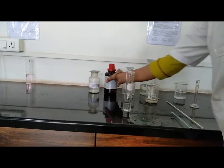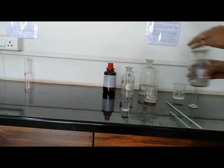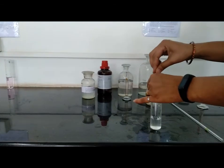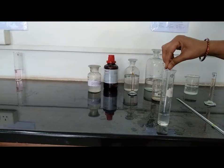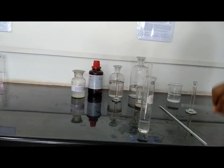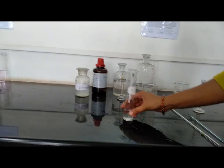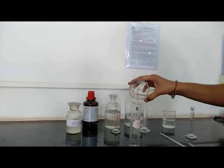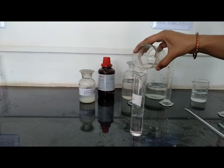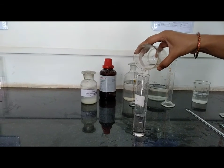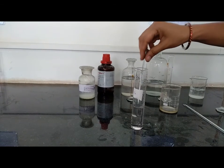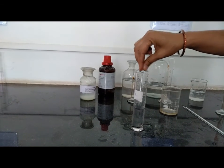Add 0.1 ml of thioglycolic acid. Add ammonia solution to make it alkaline. Mix with glass rod. And dilute it up to 50 ml with distilled water.